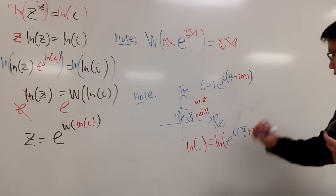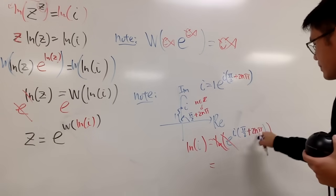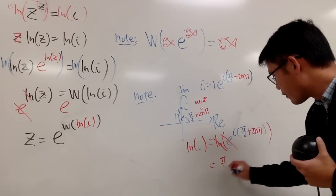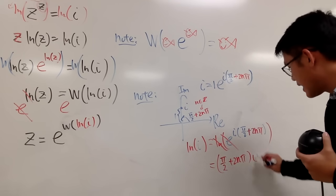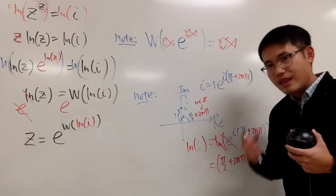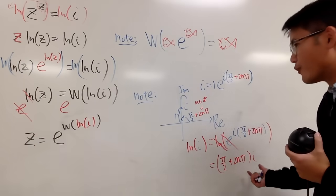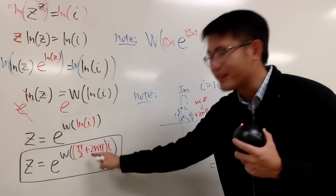And yeah, of course, this and that cancel. So let's put this down first. So we have π over 2, plus 2nπ, and then times the i, right here. Now I just have to put this right here for ln i, and this right here is our answer.